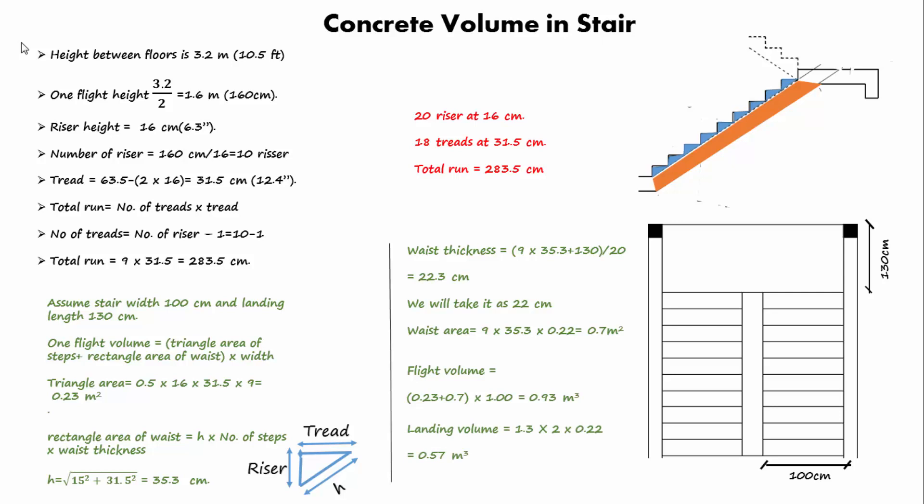Landing volume equals 1.3 × 2 × 0.22, since we consider the landing thickness to be the same as waist thickness. The landing volume equals 0.57 cubic meters. The total concrete volume in the stair equals 2 × 0.93 + 0.57 = 2.43 cubic meters.